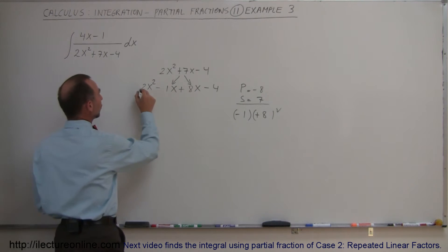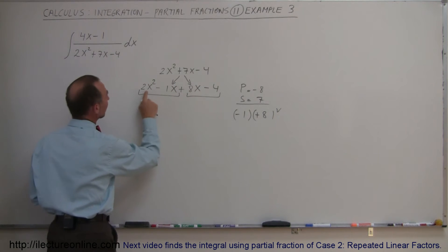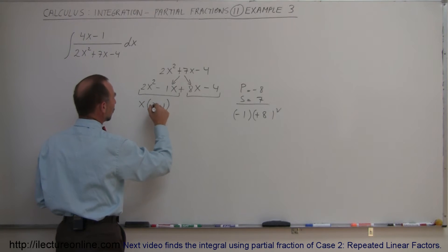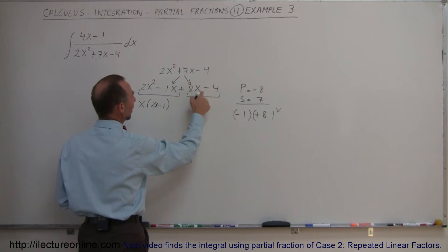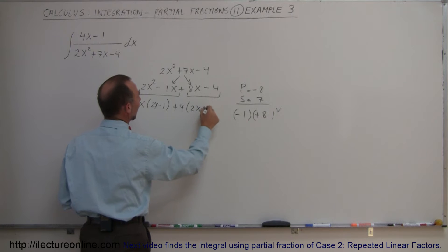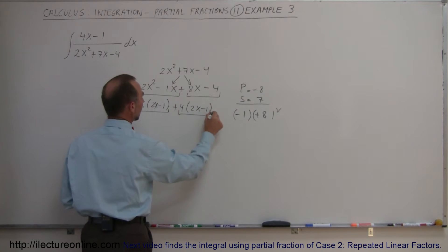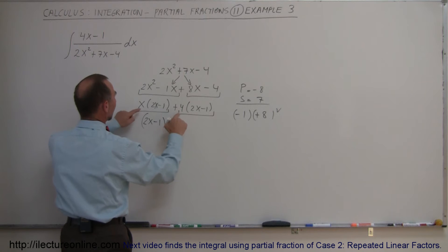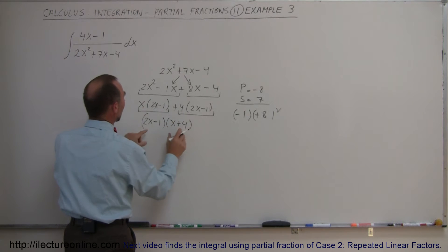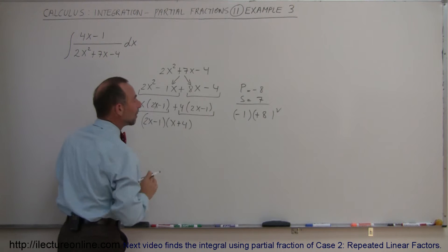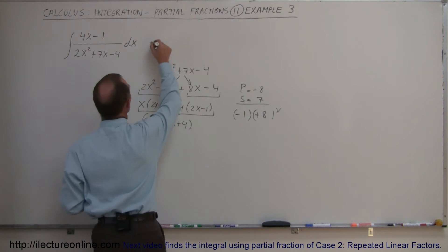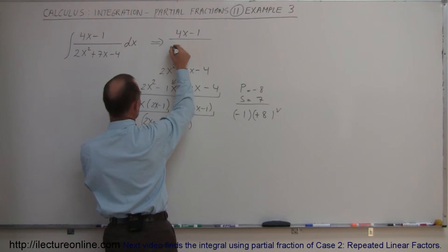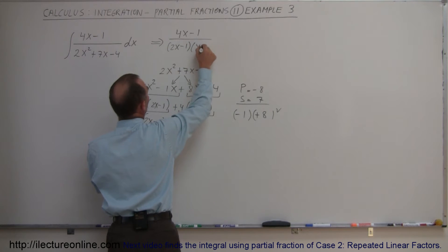Now I'm ready to group these two together. Factoring out x from the first group, I'm left with 2x - 1. From the second group I factor out 4, giving plus 4 times (2x - 1). Since 2x - 1 is common to both terms, I factor that out, leaving (2x - 1)(x + 4). So I can take this denominator and factor it into those two factors. My integrand becomes (4x - 1) divided by (2x - 1)(x + 4).